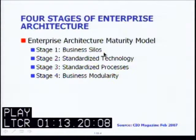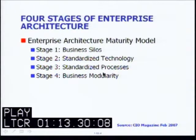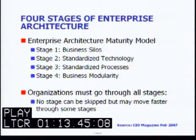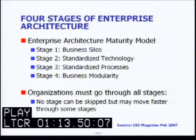The four stages are: stage one, the development of what were called business silos; stage two, standardized technology; stage three, standardized processes; and stage four, business modularity. The authors of the article documented in CIO magazine indicated that organizations must go through all stages — that no stage can be skipped — but some organizations may move faster through some stages.